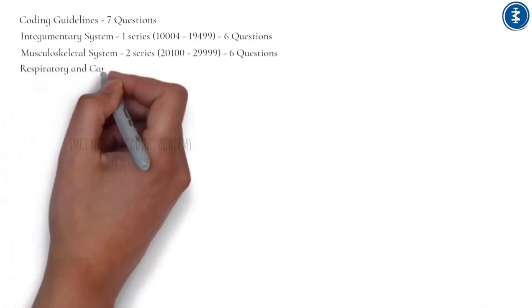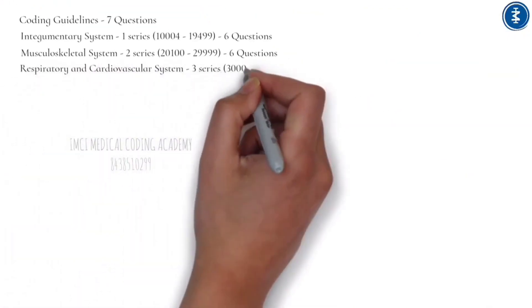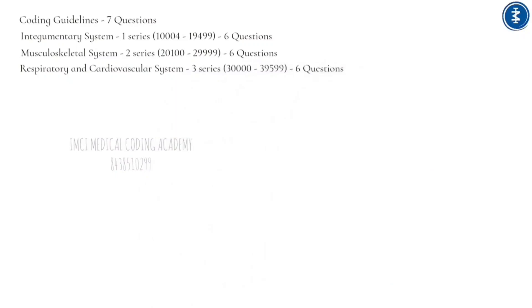The Respiratory and Cardiovascular System (Chapter 3, codes 30000–39599) contributes 6 questions. This chapter covers physician surgeries of the nose, lung, chest, heart, cardiac, and blood vessels.